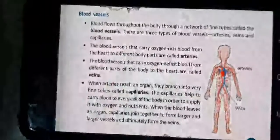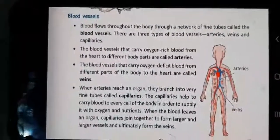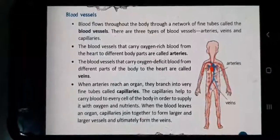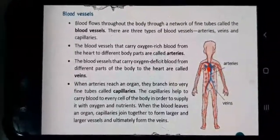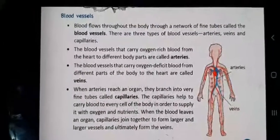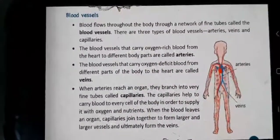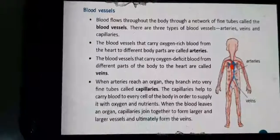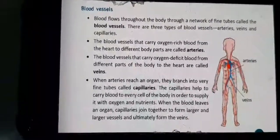The next topic is blood vessels. Blood flows throughout the body through a network of fine tubes called blood vessels, just as water flows through water pipes. There are three types of blood vessels: arteries, veins, and capillaries. The blood vessels that carry oxygen-rich blood from the heart to different body parts are called arteries.